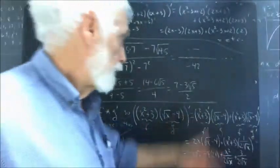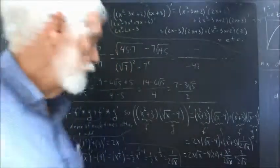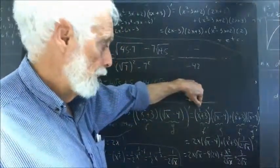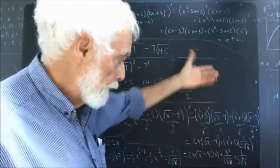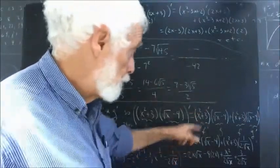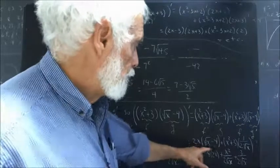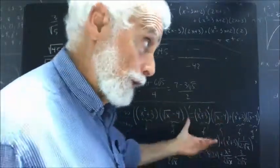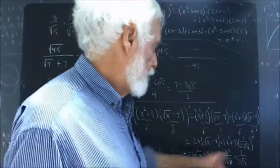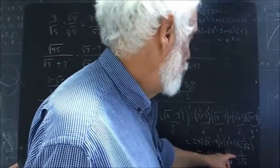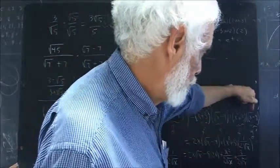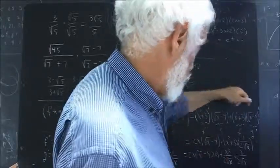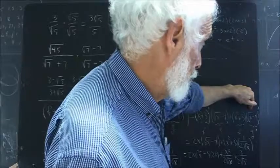The derivatives are easy enough to calculate. The derivative of x squared plus 3: the derivative of x squared is 2x, the derivative of 3 is 0. So we simply have 2x for this, and then that's multiplied by the square root of x minus 4, which we don't do anything to.